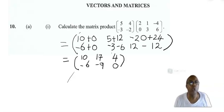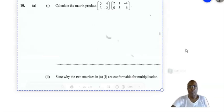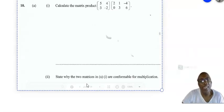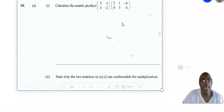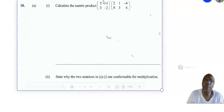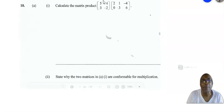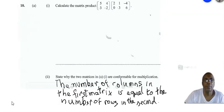We will go now on to part two. The second part of the question is to state why the two matrices in A1 are conformable for multiplication — that means they are asking to state why they can be multiplied. The first matrix has two columns, the second matrix has two rows, and therefore it can be multiplied. You state that the number of columns in the first matrix is equal to the number of rows in the second. That's it.